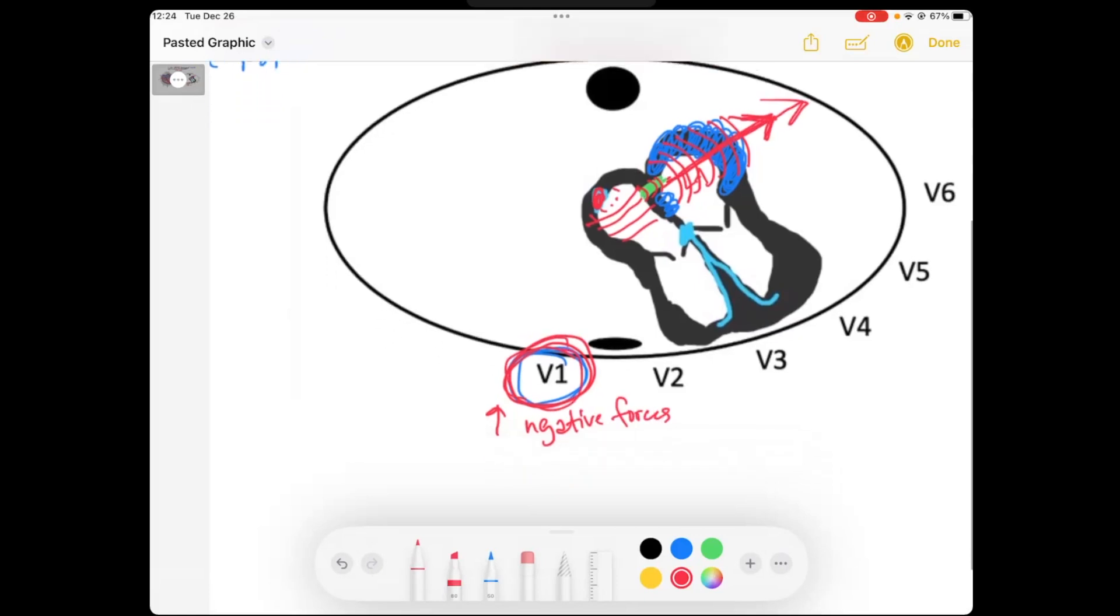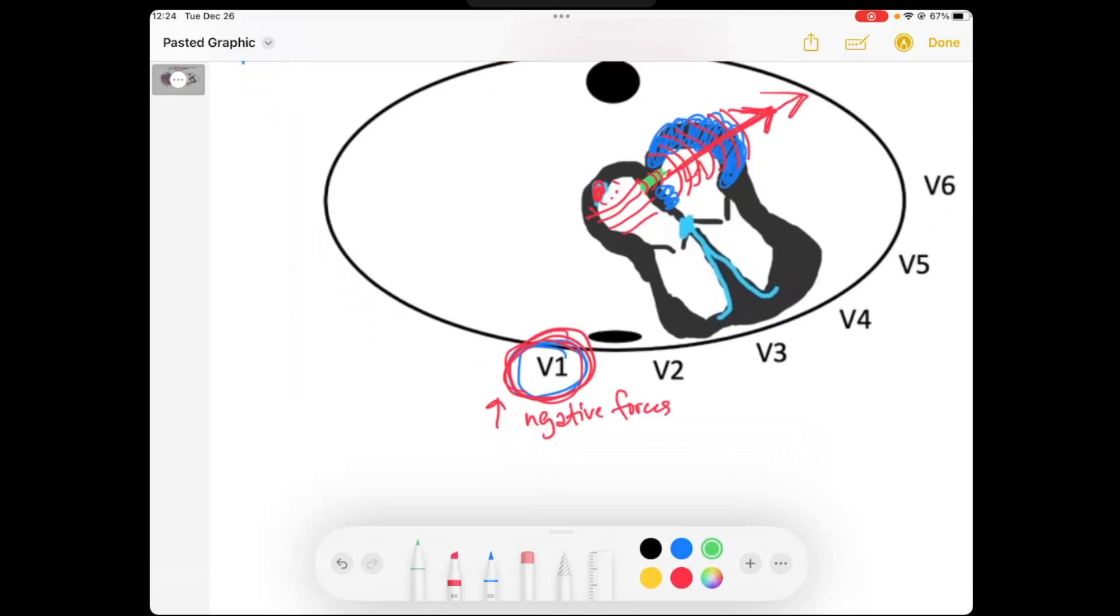And so left atrial enlargement, the criteria in V1 is going to be P wave or P forces that are negative. And they are going to be greater than 1 millimeter wide and greater than 1 millimeter deep. Now, remember, 1 millimeter is the size of one small box on an EKG.